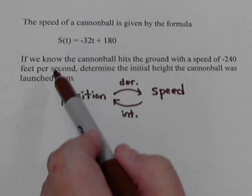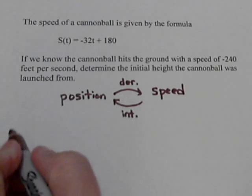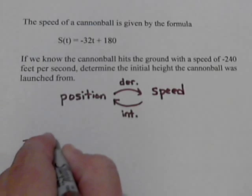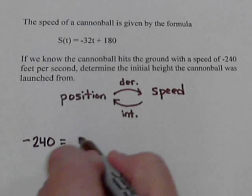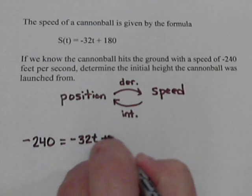We know what the speed is, negative 240 feet per second. So we can put that in for our speed up here. So we put in negative 240 for the speed, and that's going to equal negative 32t plus 180.